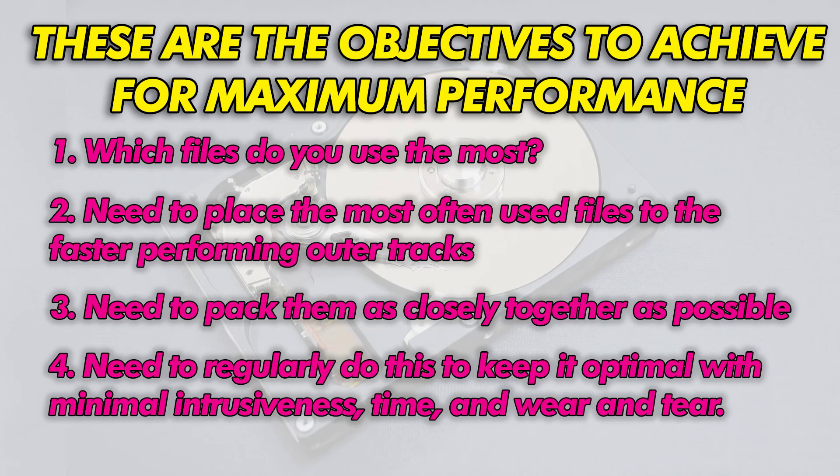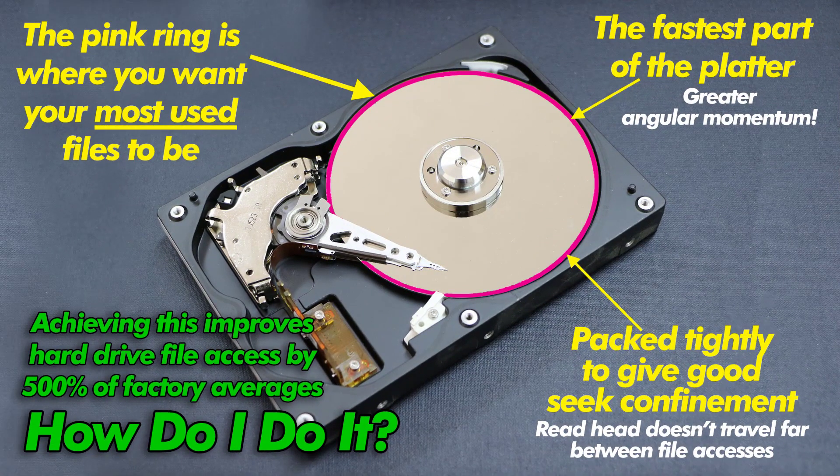The next screen shows you exactly what you need to achieve in order to have this 500% raw performance improvement. The pink ring is where you want your most used files to be — it's the fastest part of the platter with the highest angular momentum and therefore the highest transfer rates. You then want the files packed as tightly together as possible. This is maximum seek confinement, so the hard drive heads travel a minimal distance between files. And of course you want the files to be defragmented.